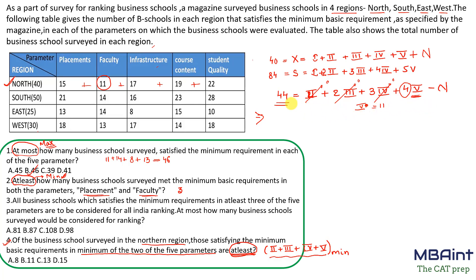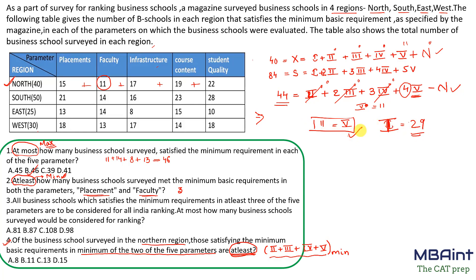When exactly5 = 11, all other terms (exactly2, exactly3, exactly4) become zero, satisfying the derived equation. Plugging back into the first equation, exactly1 = 29. So the minimum number of schools satisfying at least two of the five parameters is 11. That is the answer for this question.